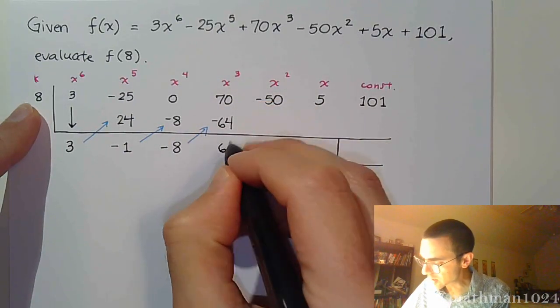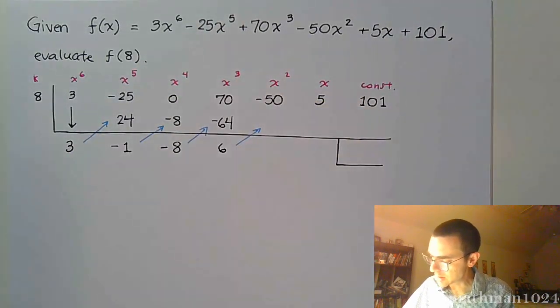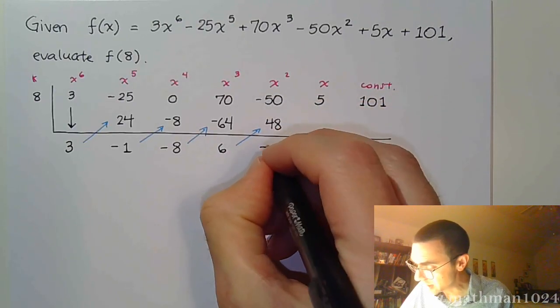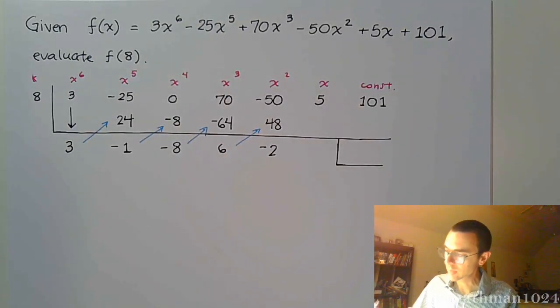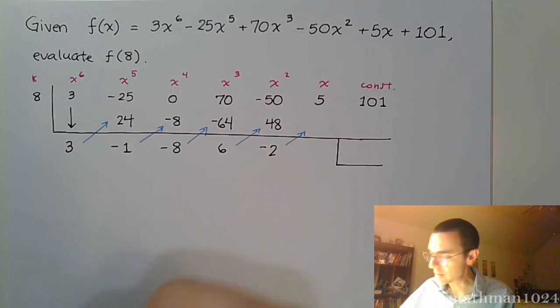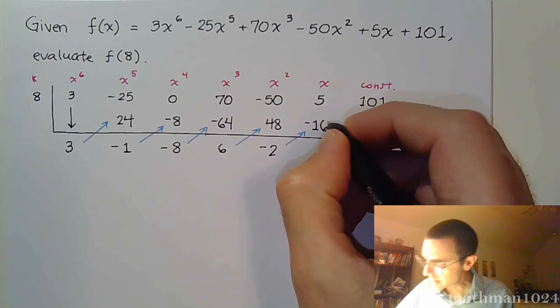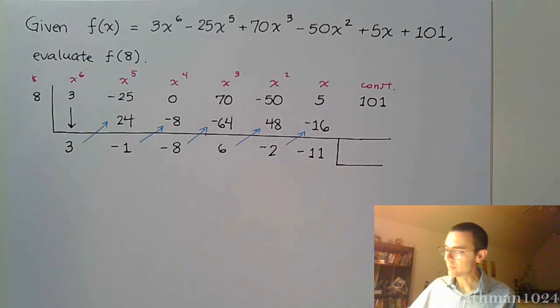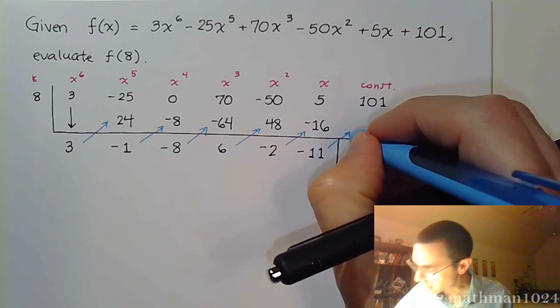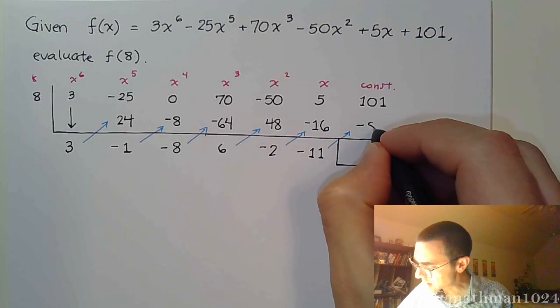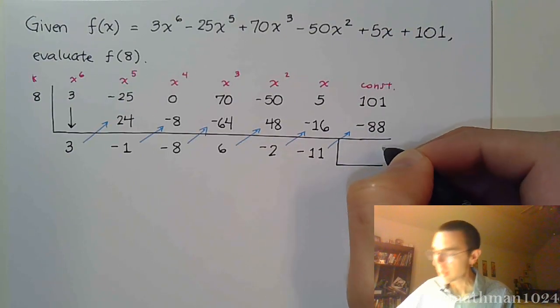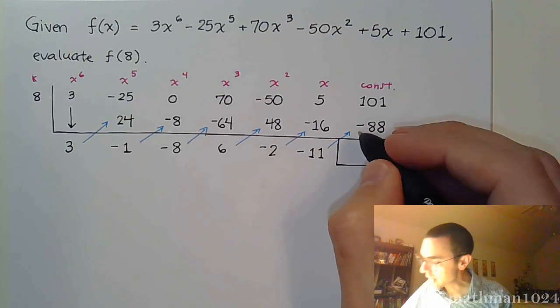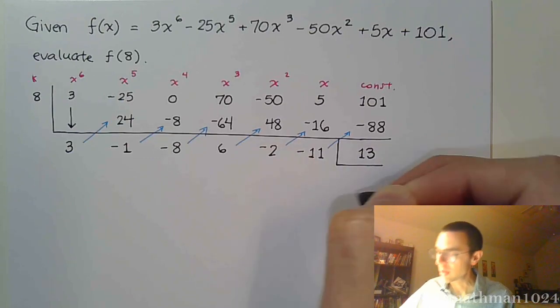Negative 50 and a positive 48 gives me negative 2. Times that k value of 8, we get negative 16. 5 and negative 16 combine to give us negative 11. Times 8, 1 final time, and we get negative 88. So, 101 minus 88 is 13.